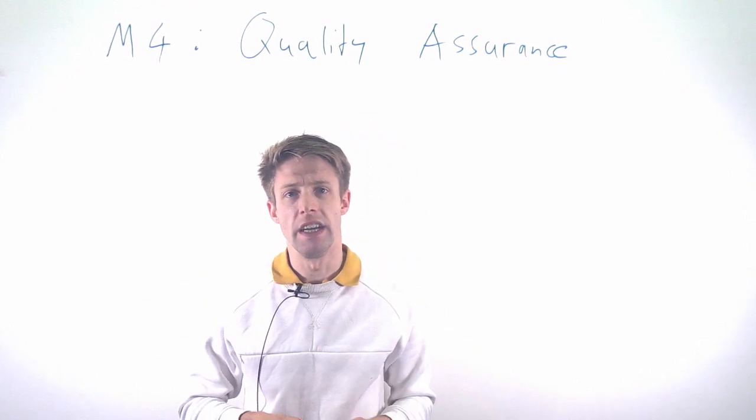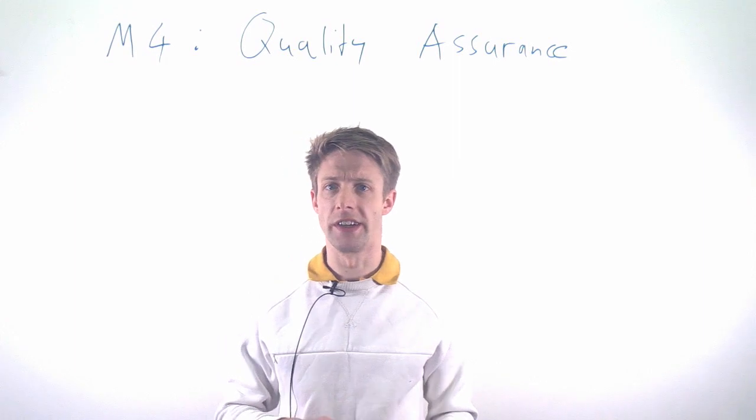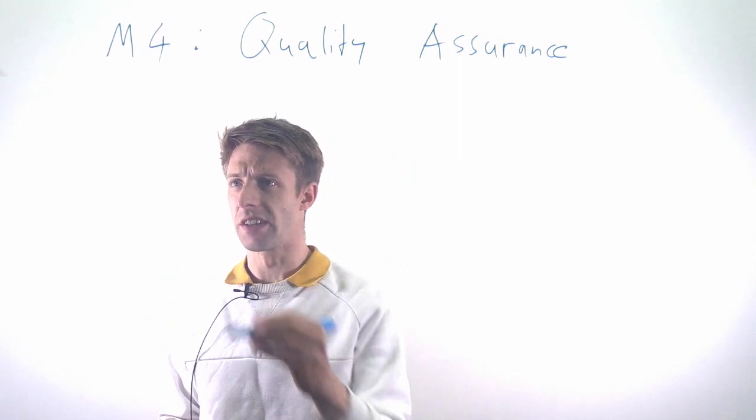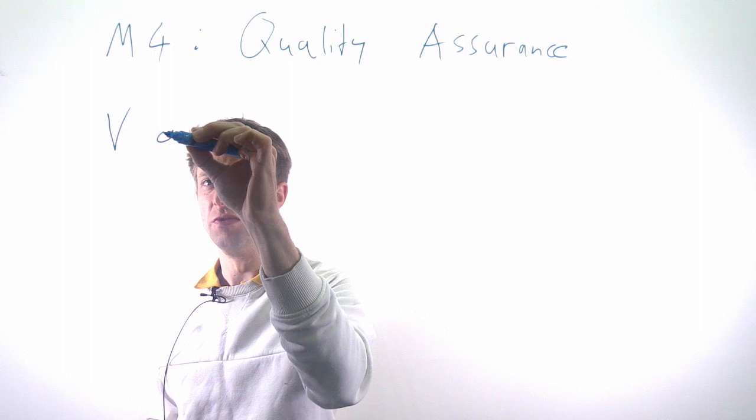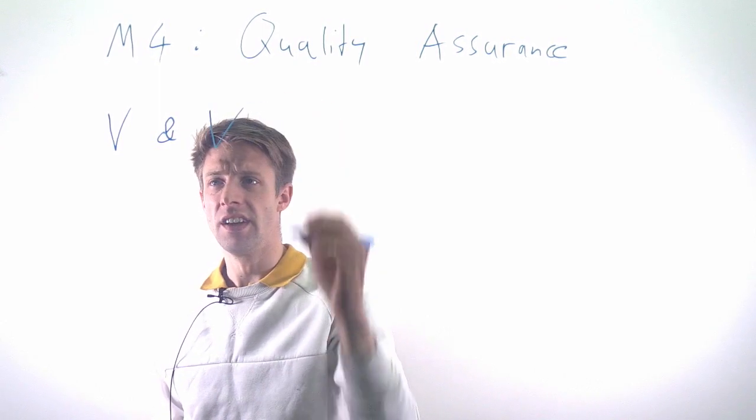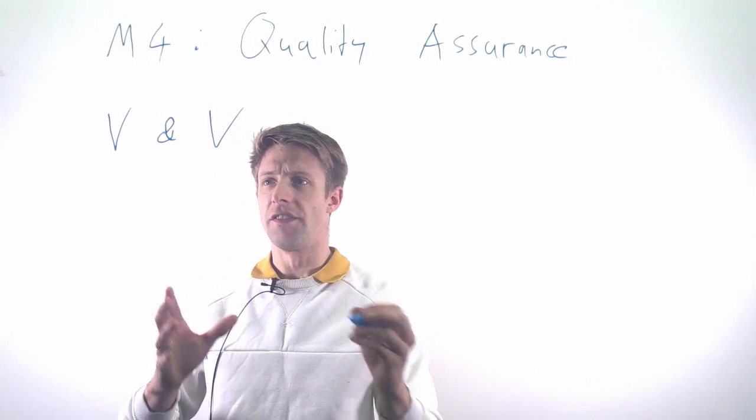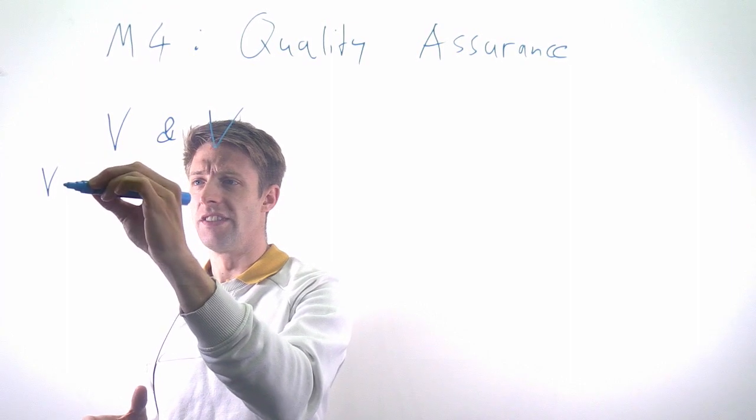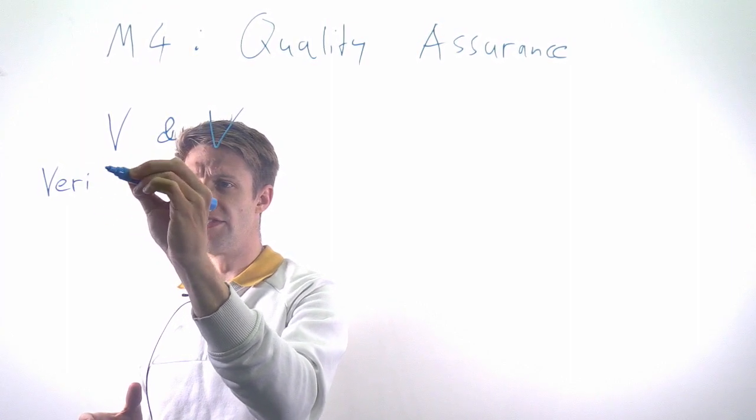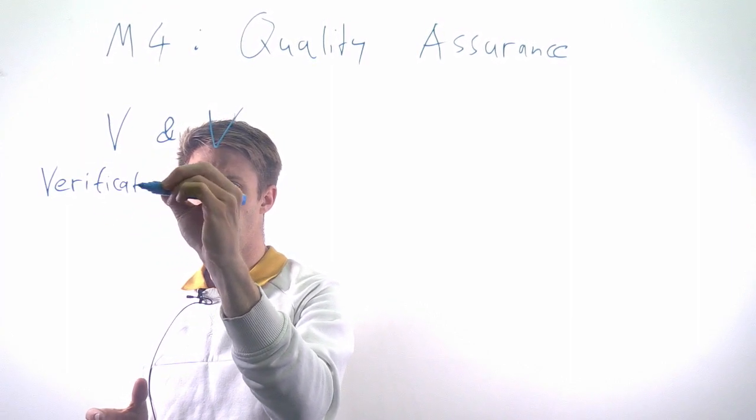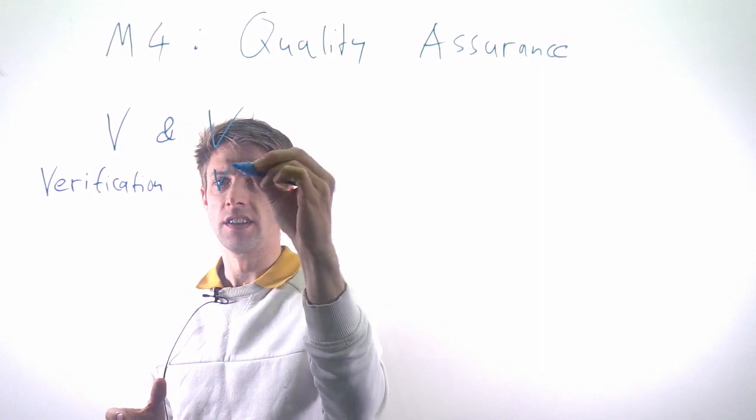Now to start off, if you are talking about software engineering, there's a term that is rather common, and that's to talk about the two V's: V and V. That is standing for two activities, verification and validation.